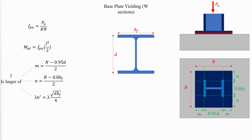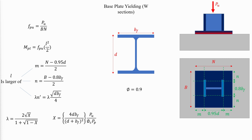Lambda N' can be calculated using the concrete compressive strength and resistance factor previously shown. Lambda can conservatively be taken as 1. The resistance factor for this case is 0.9, and the minimum required thickness of the base plate can then be determined.